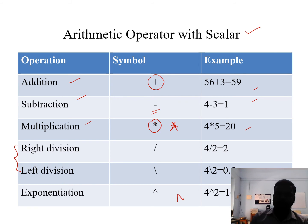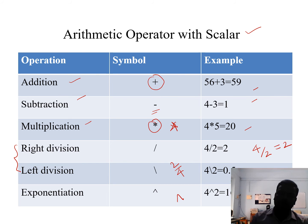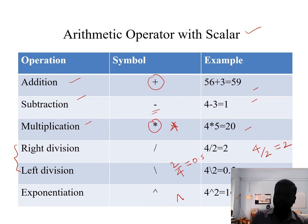The right division and left division are totally different. For example, 4 / 2 (right division) means 4 divided by 2, which equals 2. But 4 \ 2 (left division) means 2 divided by 4, which equals 0.5. For the exponential, for example 2^3 means 2 to the power 3, which equals 8, entered as 2 ^ 3 and the result displayed is 8.